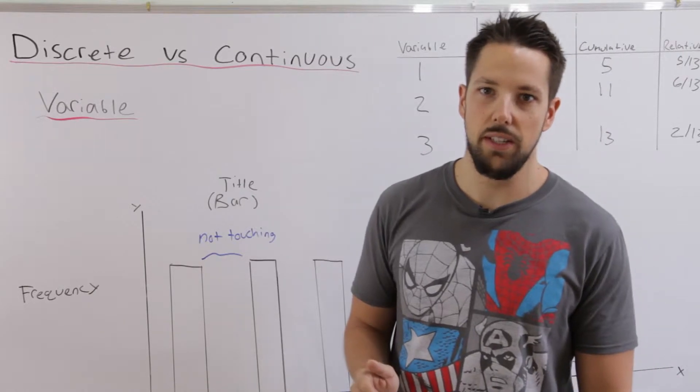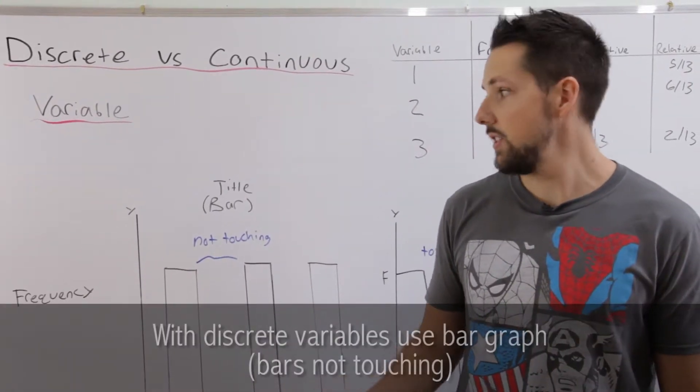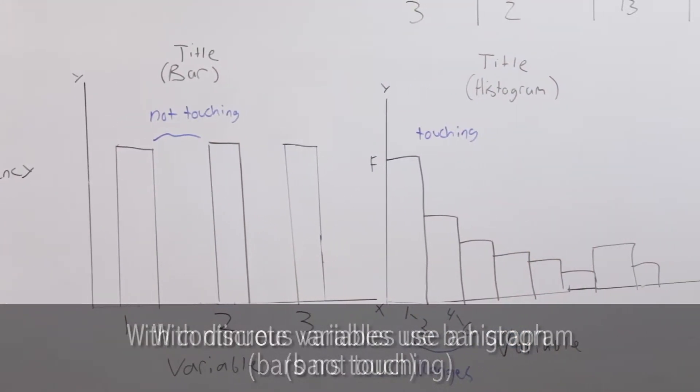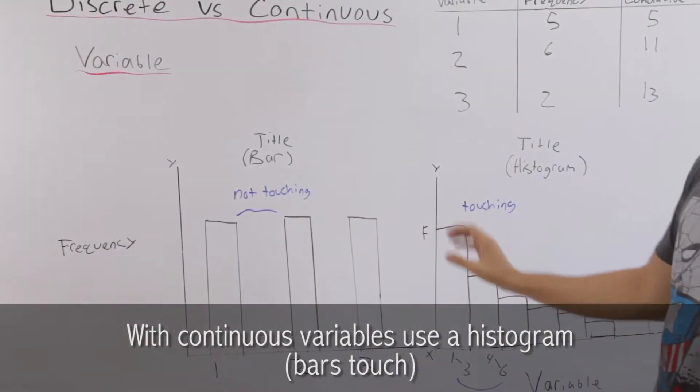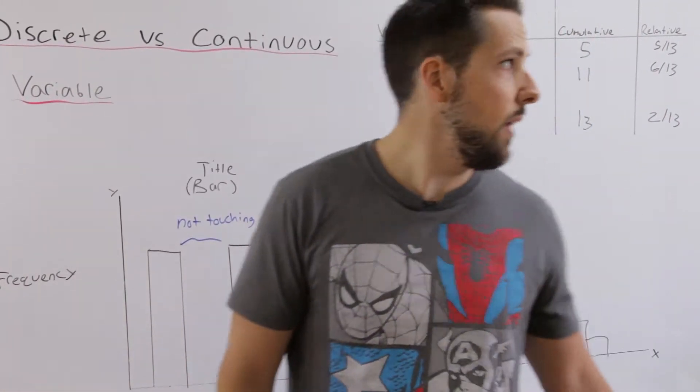Depending on what the variable is in your study, you're going to do different graphs. With discrete variables, you're going to use a bar graph. With continuous variables, you're going to use a histogram. Now the two graphs are pretty similar. We set them up in the same way. So I'll show you how to set them up.